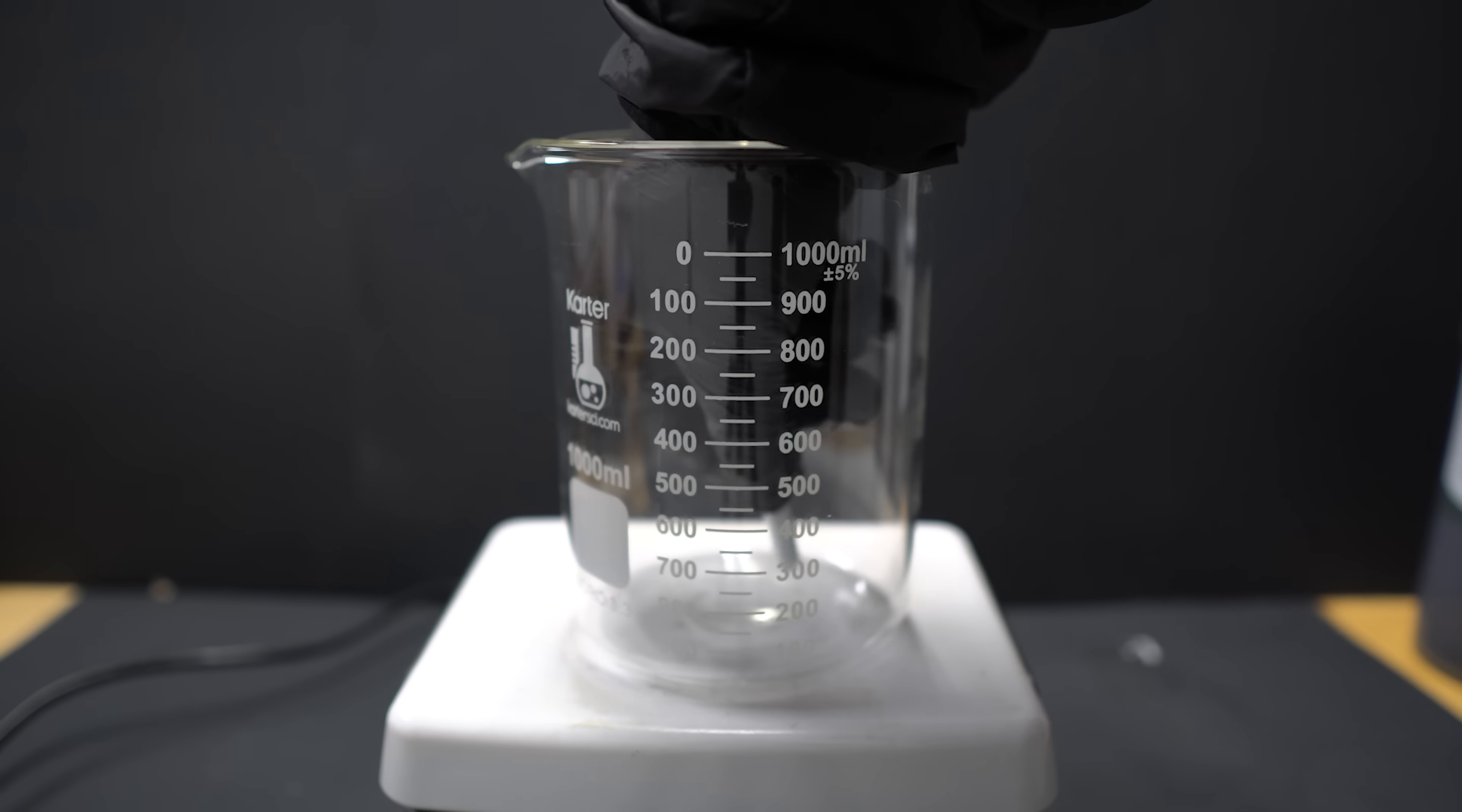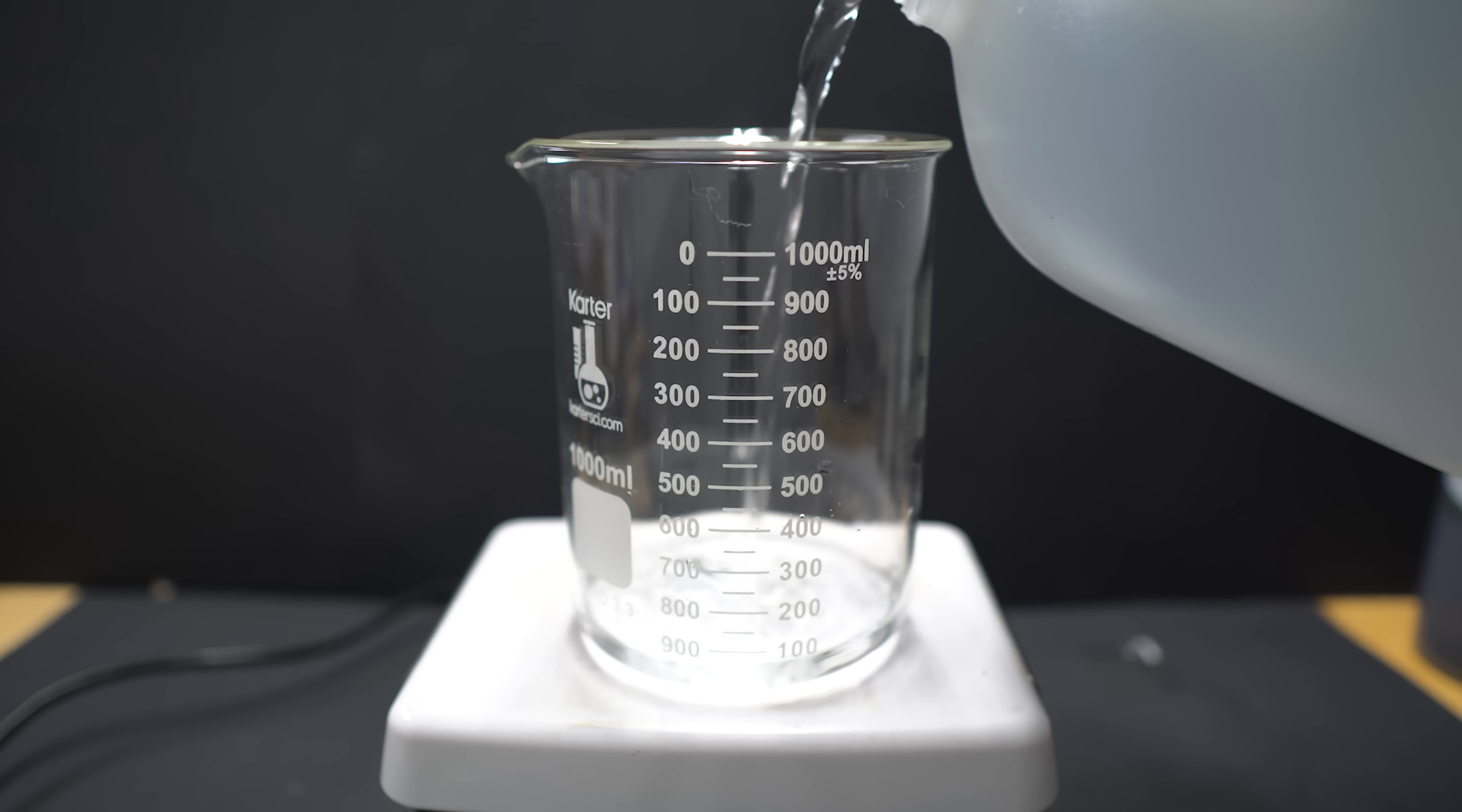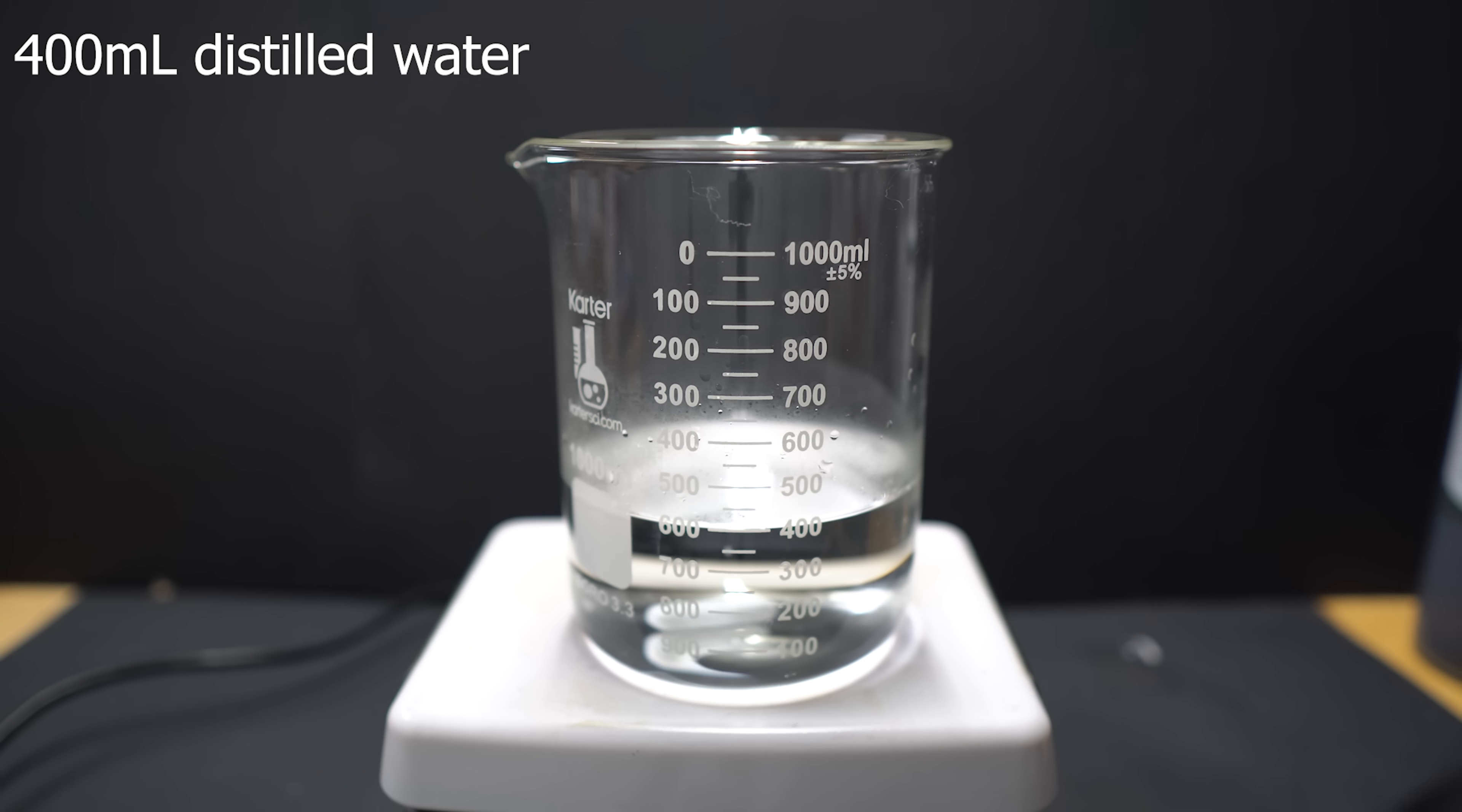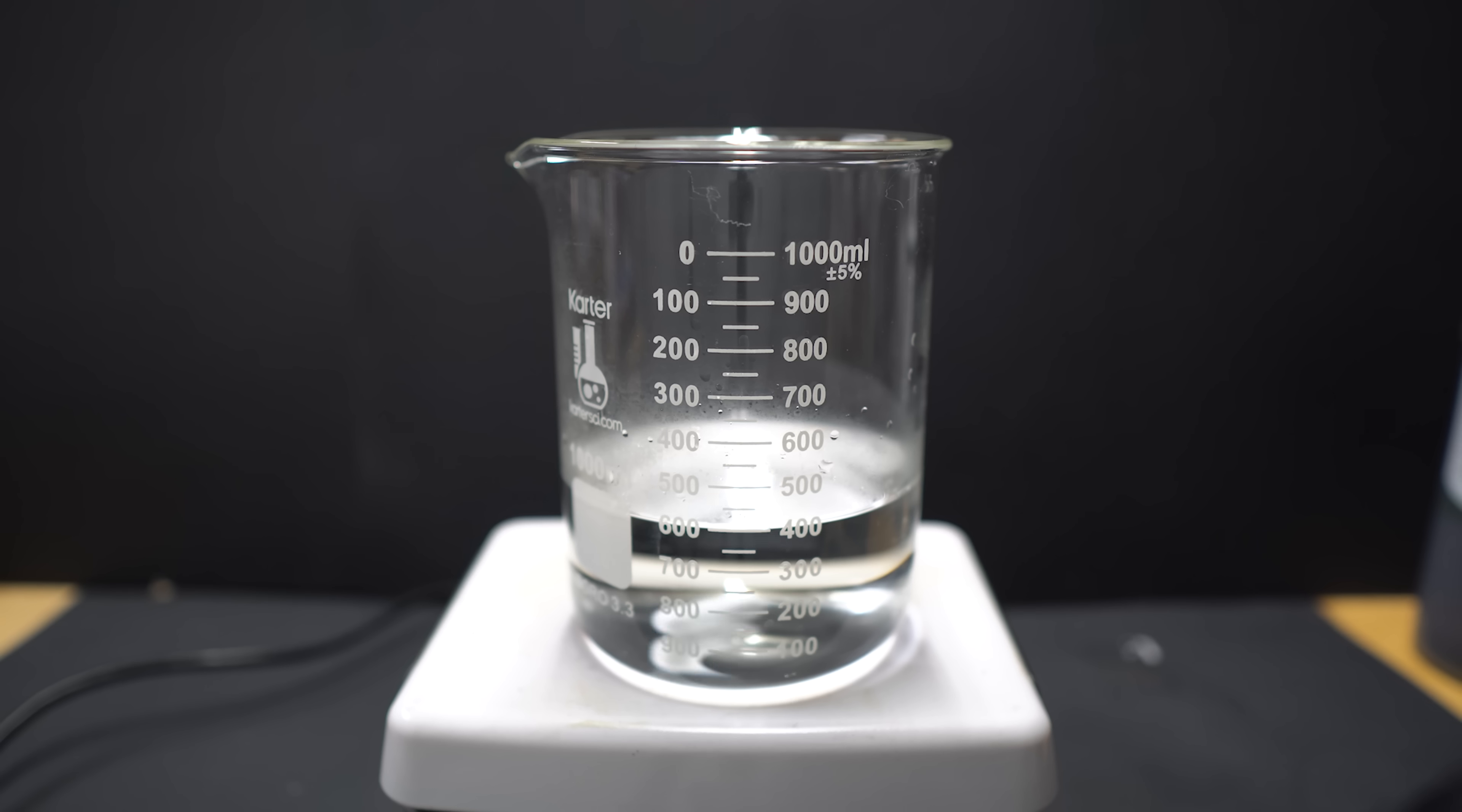I'm first going to get a 1-liter beaker, and I'm going to put a stir bar into it, and I'm going to fill it up to about 400 milliliters of water. I will be using NerdRage's hydrobromic acid tutorial, so that's what I'm going to be using today.